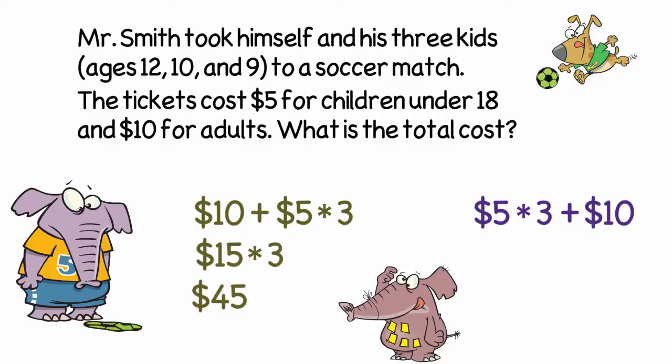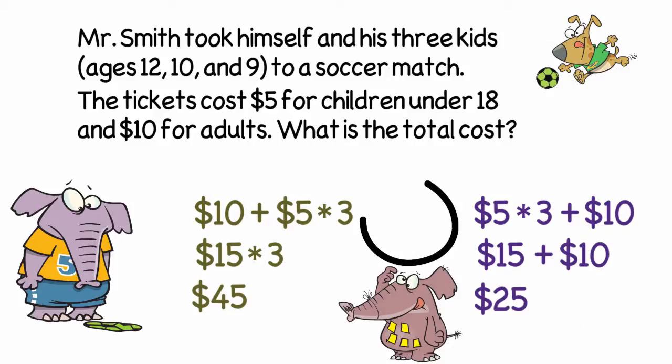And in the second situation, it would be 5 times 3, which is 15, plus 10, for a total of $25. How can we get two different answers? That doesn't make sense.